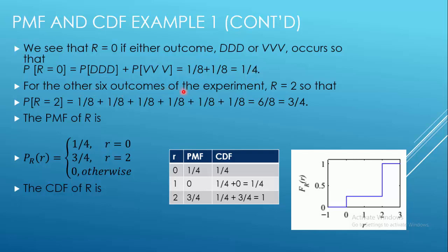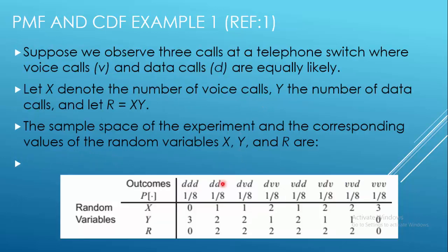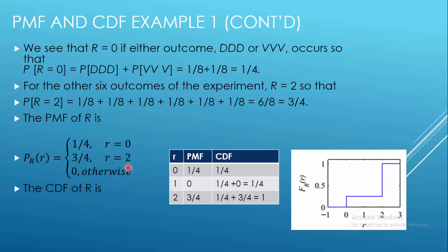For the other six outcomes, R equals 2 and the probability is the same for each, so we add them up for all six remaining outcomes — R equals 1, 2, 3, 4, 5, 6 — and we get 3/4. So the PMF is: P(R=2) = 3/4, P(R=0) = 1/4, and P(R=1) = 0.